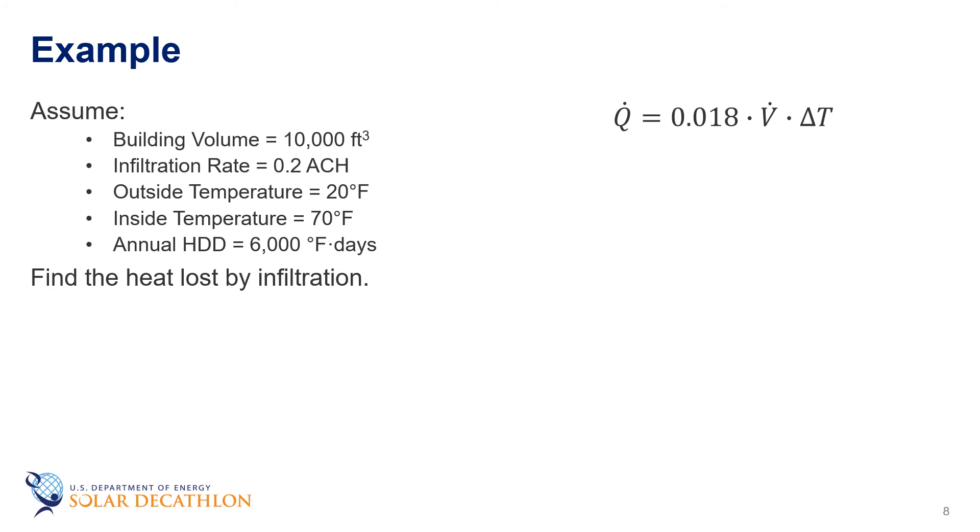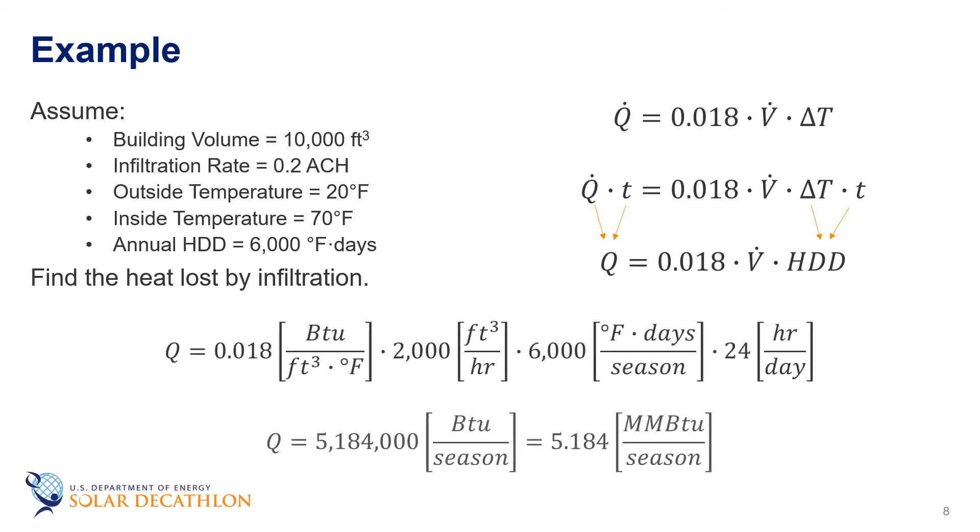We can also multiply both sides by time to get a seasonal energy impact, much like we did in one of our other building envelope episodes for conduction through walls for the entire season. Don't forget to convert with the 24 hours per day. The result is 5.18 million BTUs per season. This is the approximate amount of energy that would be required to heat the air infiltrating the building during the heating season. This is in addition to the energy required to replace heat loss by conduction through the walls and windows. And you may be wondering about the opposite example during the summer when it's hot outside. The approach for that example would exactly be the same as the one we just did. Just replace the heating degree days with cooling degree days to represent the cooling needed to cool the air because of infiltration.